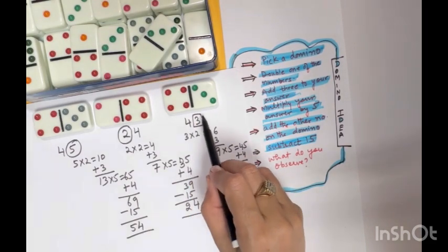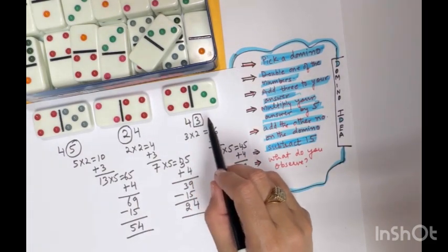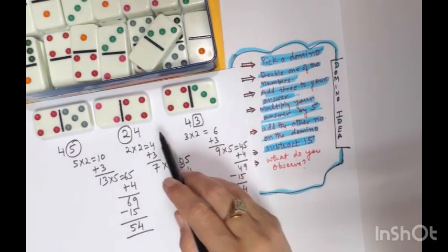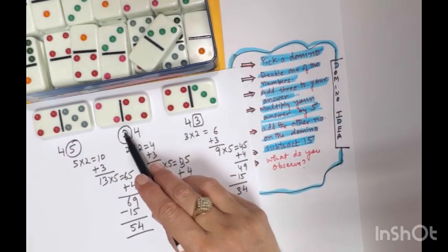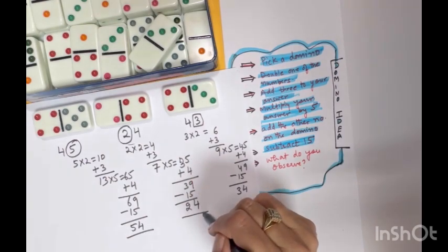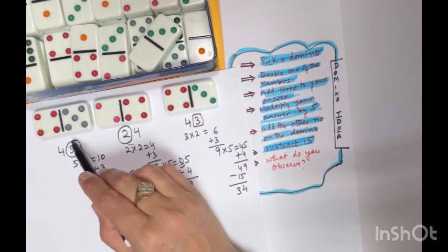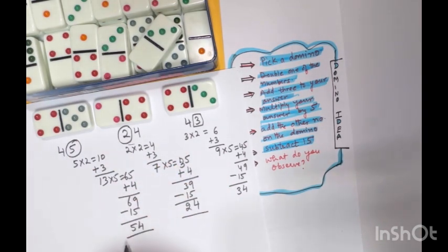The original number is 43, we are getting here 34. Here the original number is 24, we are getting here 24. Here the original number is 45 and we are getting 54. What do you think is the reason? Tell me in the comment.